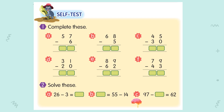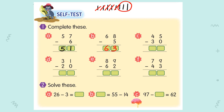Now let us complete this together. Look at A: 57 minus 6 equals what? 7 minus 6 equals 1, bring down 5. Answer for A is 51. Now look at B: 58 minus 5 — eight minus five, take out five, left three — write down 3, bring down 6. So the answer is 63.